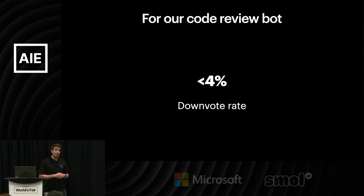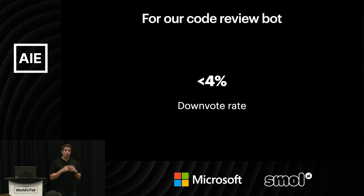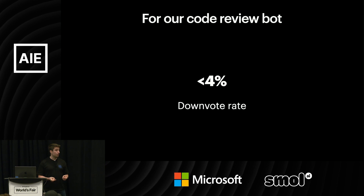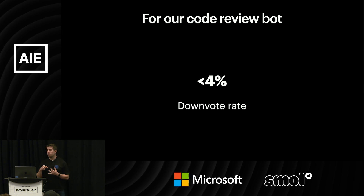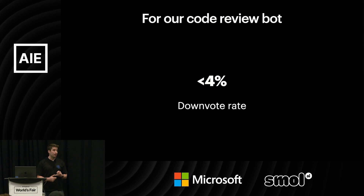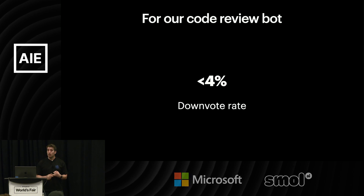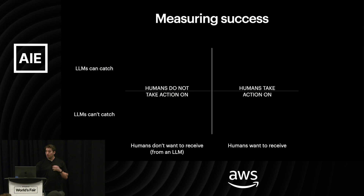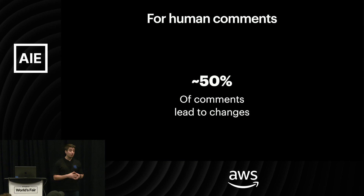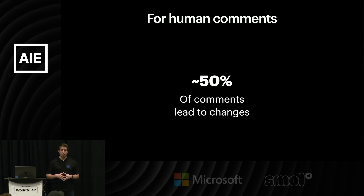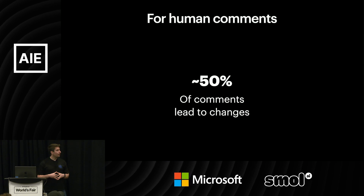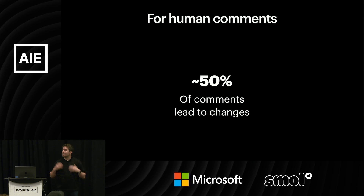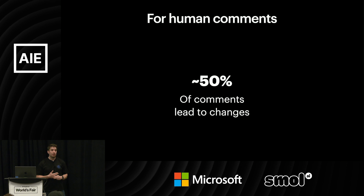And so our question was: can we measure that? Can we measure what percent of comments actually lead to the change they describe? We started doing that — asking that question on open source repos and the variety of repos that Graphite has access to. One of the most fascinating things we found was that only about 50% of human comments lead to changes. So we started to ask: could we get the LLM to at least this? Because if we do, it's leaving comments at the same fidelity that humans are.